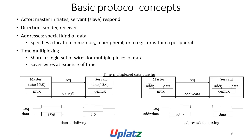Basic protocol concepts: the actor is master (initiates) or slave (responds). Direction has sender and receiver. An address is a special kind of data that specifies a location in memory, a peripheral, or a register within a peripheral. Time multiplexing shares a single set of wires for multiple pieces of data, saving wires at the expense of time. In time-multiplexed data transfer, a master sends a request; once the servant acknowledges, data serializing occurs and data is sent in two clock cycles. Address-data multiplexing or data-only serializing can be used.